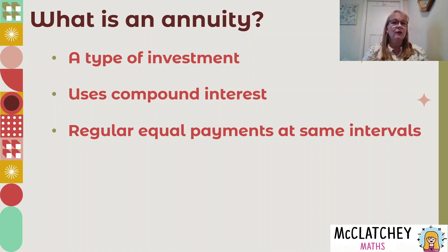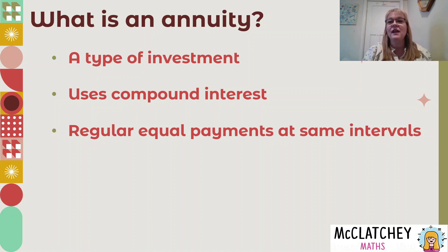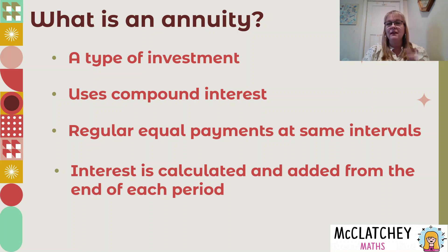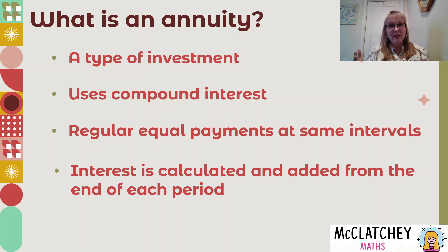Annuities involve very special situations — there are equal regular payments at the same intervals. It could be a payment going into or out of the investment of a thousand dollars every week, every month, or every year. It's the same amount of money happening at regular intervals every single time, and we calculate interest and add it to the investment at the end of each period.